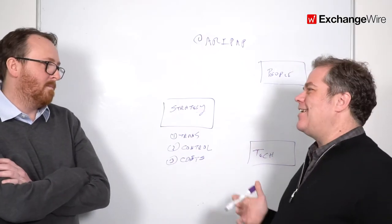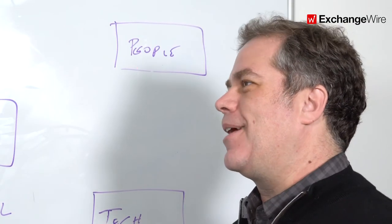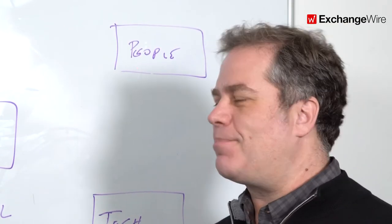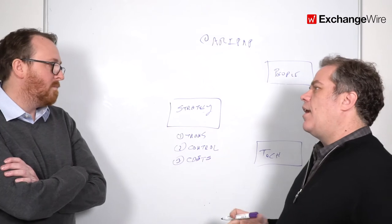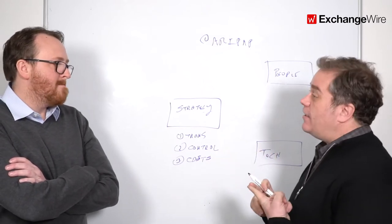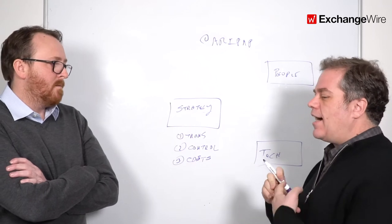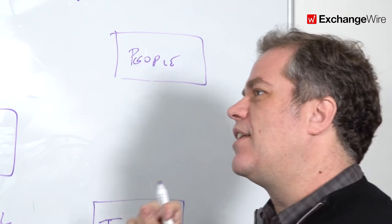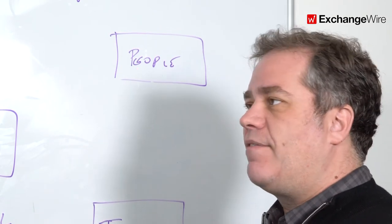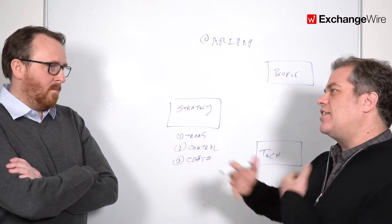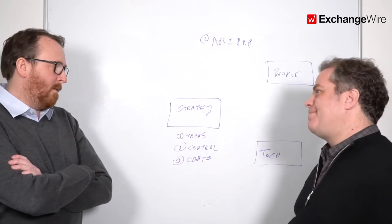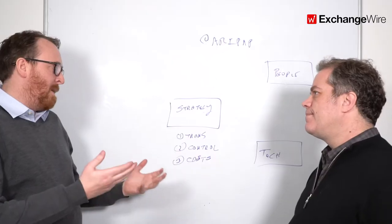To start with any strategy conversation, it's what are the business outcomes I'm looking to achieve? Why am I not satisfied with the current situation? Usually it has to do with some measure of transparency. Second thing is control, and the third thing is costs. Those are usually the three driving factors that may start this in-housing conversation.